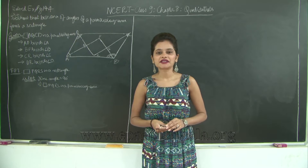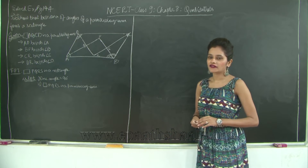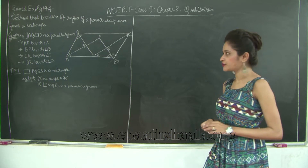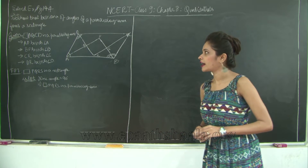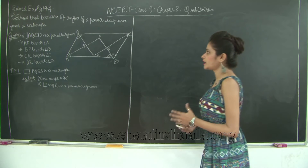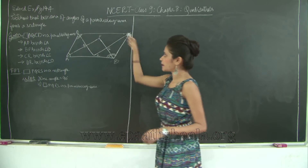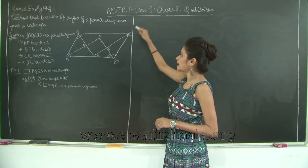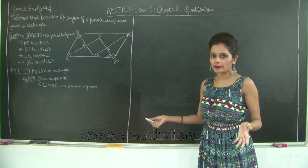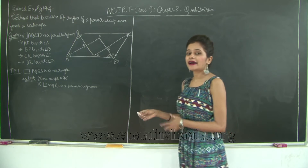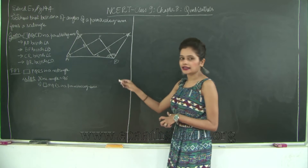Hello students, let us continue with chapter 8 quadrilaterals. We will take a look at solved example number 5 on page 144. We need to prove that the bisectors of angles of a parallelogram form a rectangle. We have drawn a parallelogram ABCD in which AB is parallel to CD and equal, and BC is parallel to AD and equal. We need to prove that the bisectors of angles of a parallelogram form a rectangle.